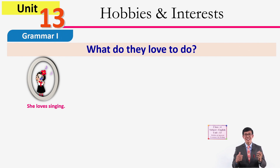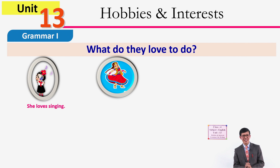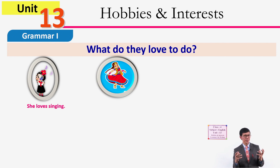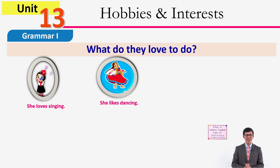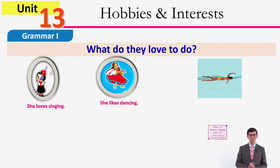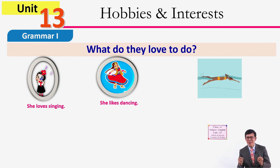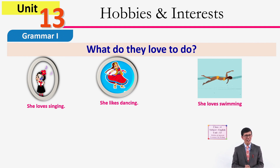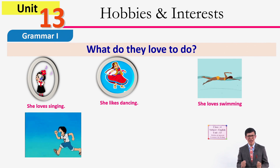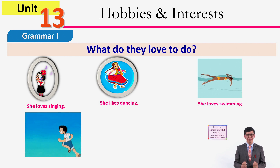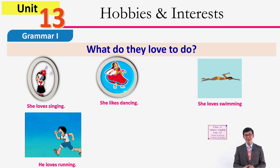Her hobby is singing. Now look at the second picture - what does she love to do? Very good, she likes dancing, so dancing is her hobby. And look at another one - what is she doing there? Swimming! Perfect, so swimming is her hobby. And look at another one - he's running, so his hobby is running. He loves running.